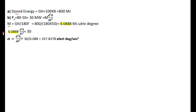The acceleration d²δ/dt² can be found by transferring 0.0888 to the other side. So d²δ/dt² = 30 divided by 0.0888, giving an acceleration of approximately 337.83 electrical degrees per second squared.